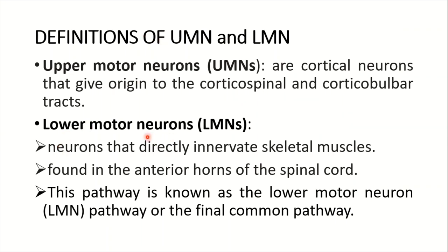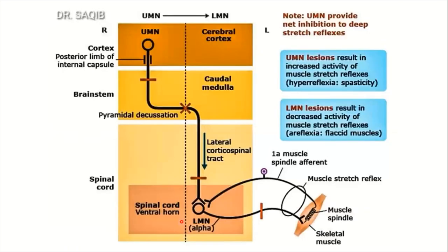Then the lower motor neurons — these are neurons that directly innervate skeletal muscles. They are found in the anterior horns of the spinal cord. This pathway is known as the lower motor neuron pathway or the final common pathway.